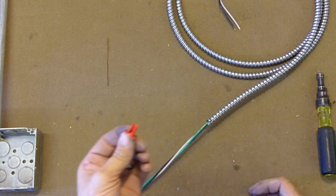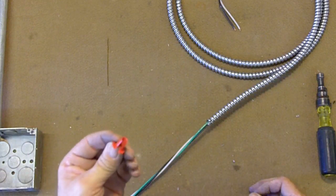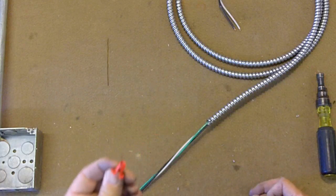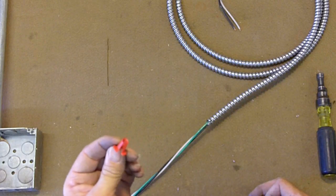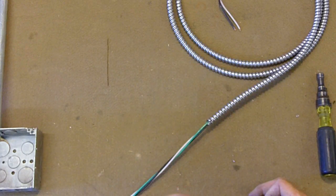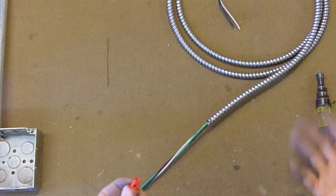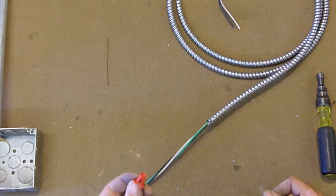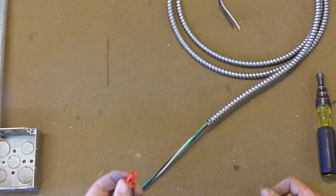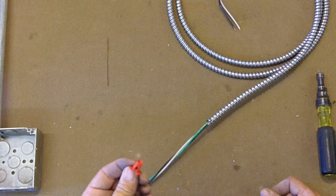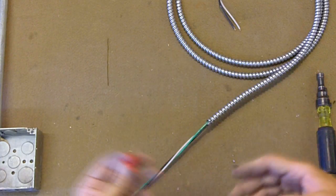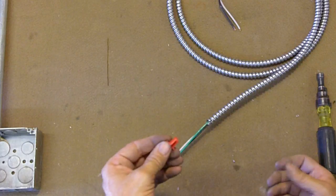Let me just take the sheathing here and we'll split that off. We'll take our anti-short bushing and there seems to be some discrepancy on whether this is code or not. I don't think that it is. But they're sent out with the role of MC so I'm assuming that the manufacturer recommends it. And so is it a UL listed without this? I don't know.